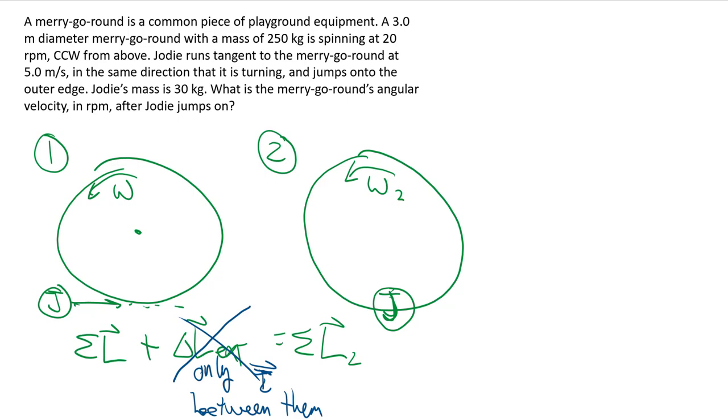What is an added element here is that the child initially is not spinning, she's just running straight. So how do we incorporate that in our angular momentum? Well, as it turns out, the term of angular momentum actually has two parts.